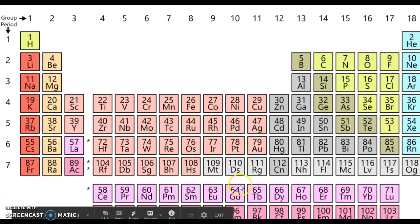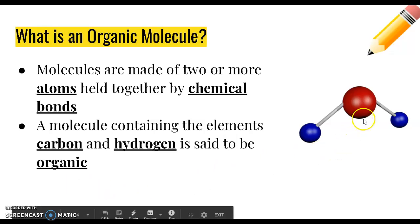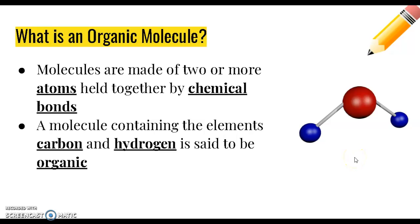These are all of the different atoms that can be used to build molecules. Molecules are made of two or more atoms and are held together by chemical bonds. This is a model of a water molecule. These red and blue spheres represent atoms, and they are held together by these rods which represent a chemical bond. So the atoms are bonded together and this forms a molecule.